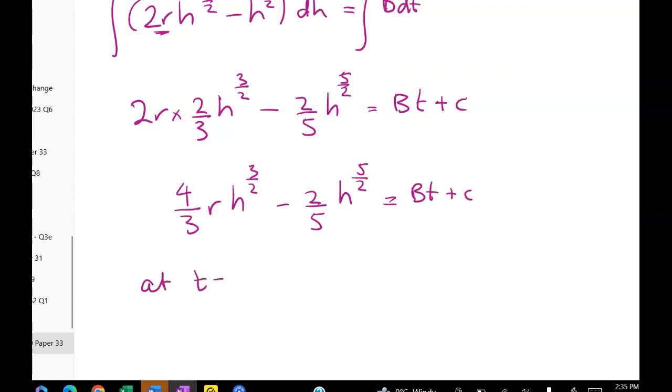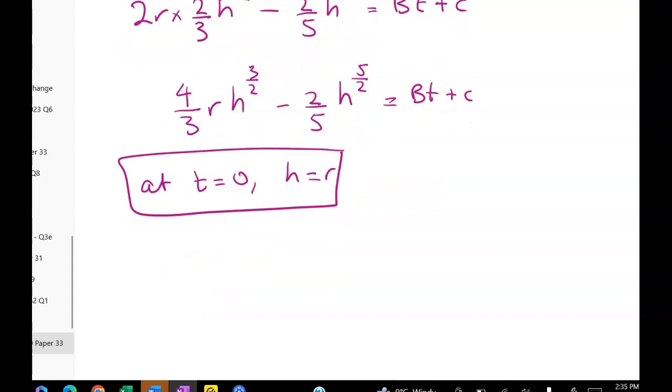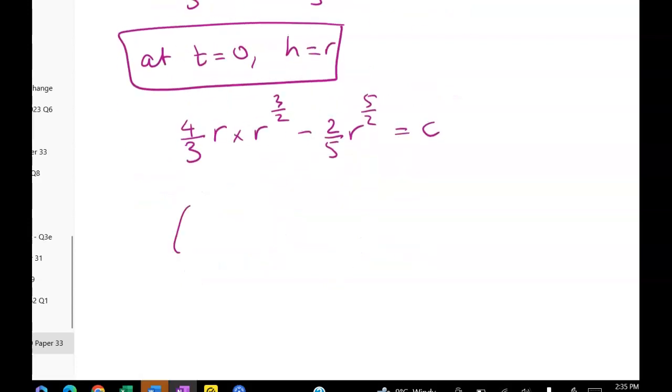So the first thing I'm going to sub in is that at T equals zero, H is equal to R. That means that I get four thirds R times R to the three over two minus two fifths of R to the five over two is equal to zero plus C. That gives me four thirds minus two fifths of R to the five over two is equal to C. Getting a common denominator gives me three fives, four fives of 20 minus five threes, two minus six.